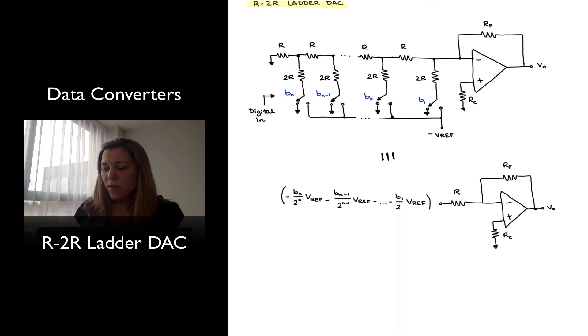But instead of having all those inputs connected by resistors of value R all the way to 2 to the n minus 1 times R, now what we have is essentially an R-2R ladder which is just comprised of several resistors of value R in series and 2R in shunt connected to ground, or in this case connected through those switches to the reference voltage minus VREF.